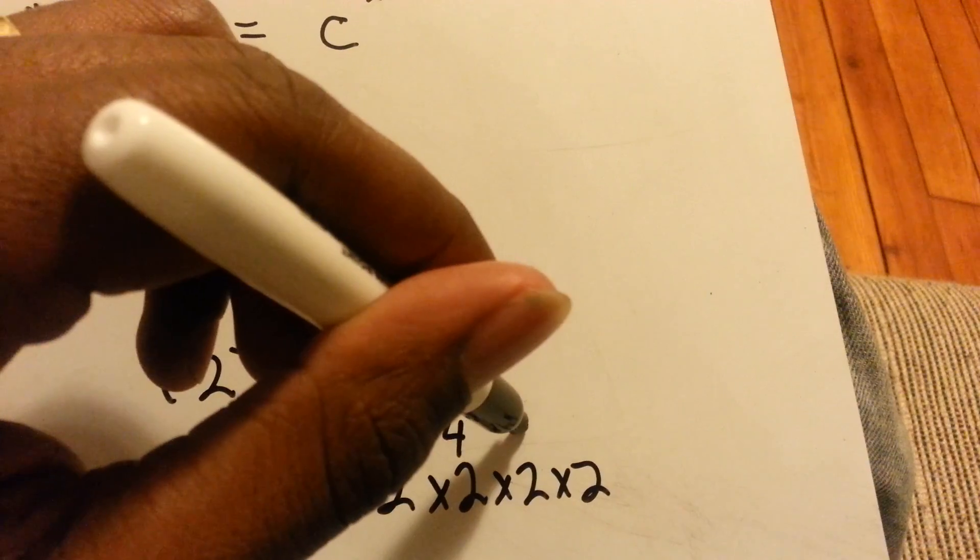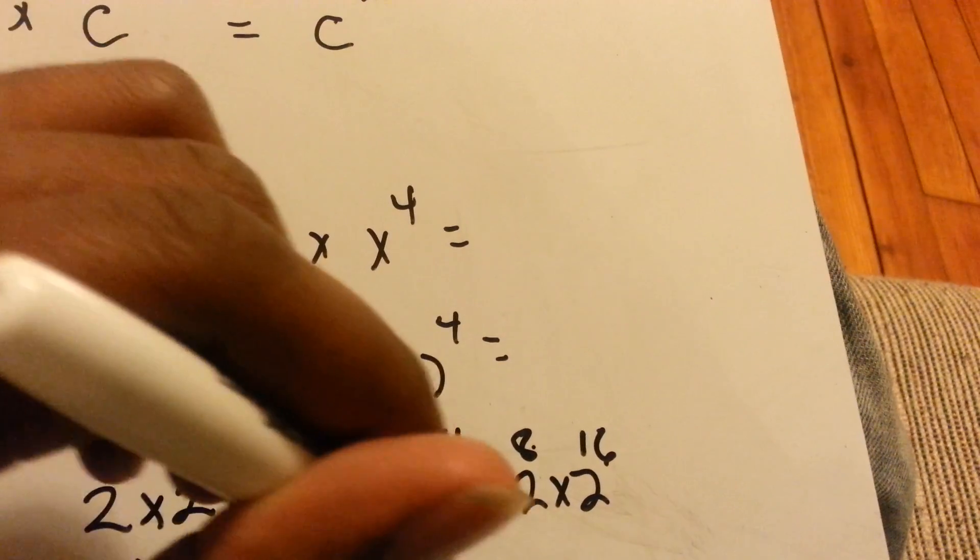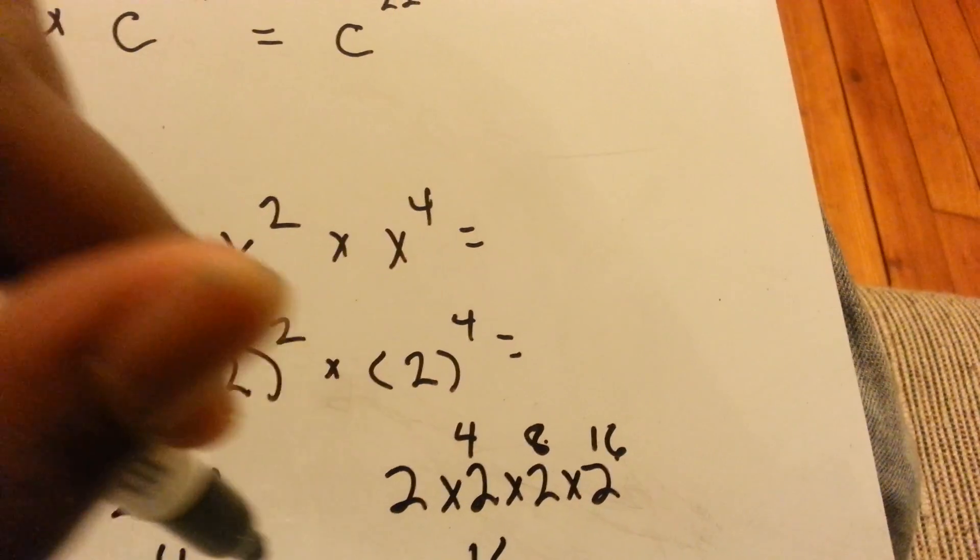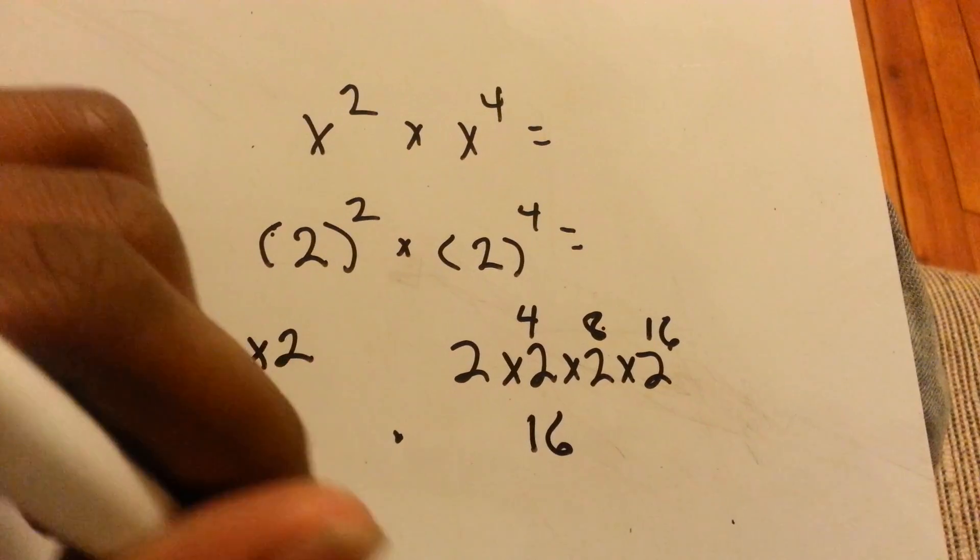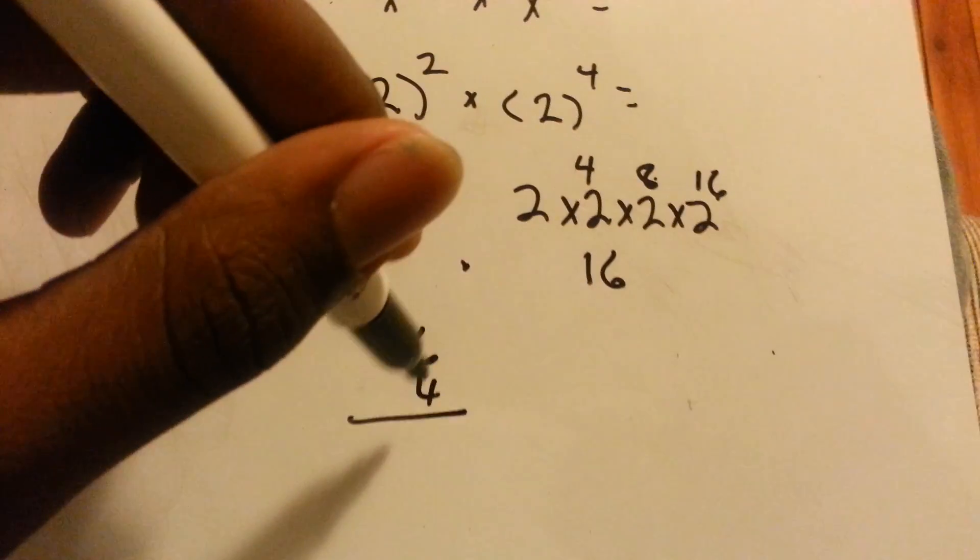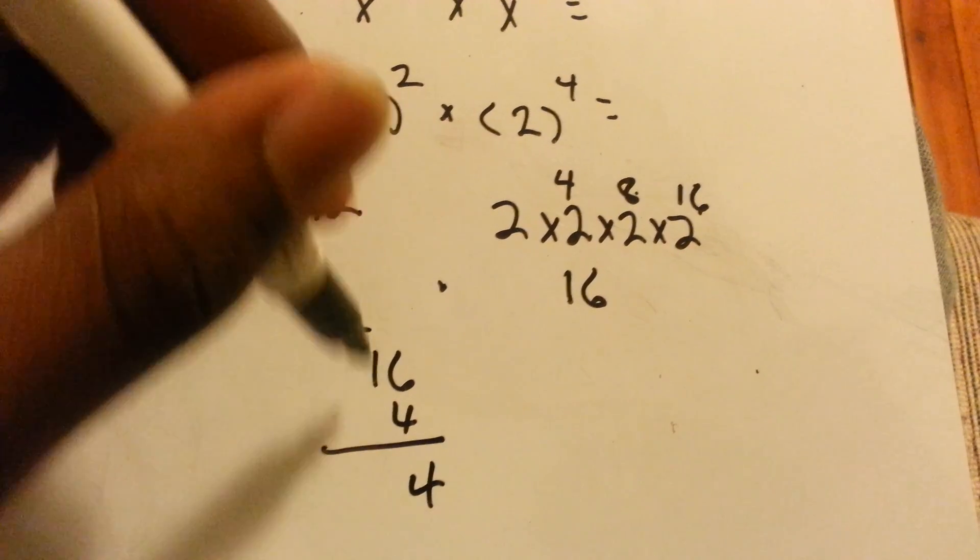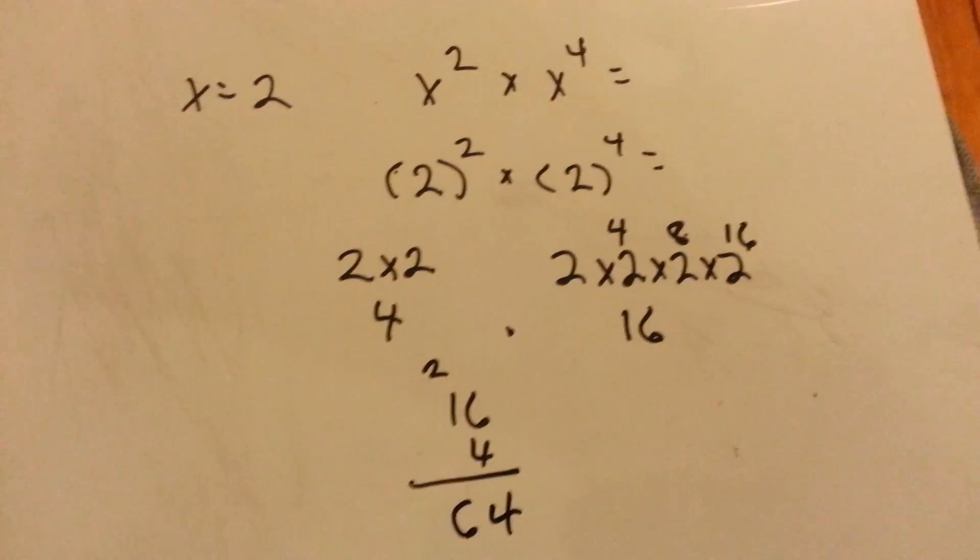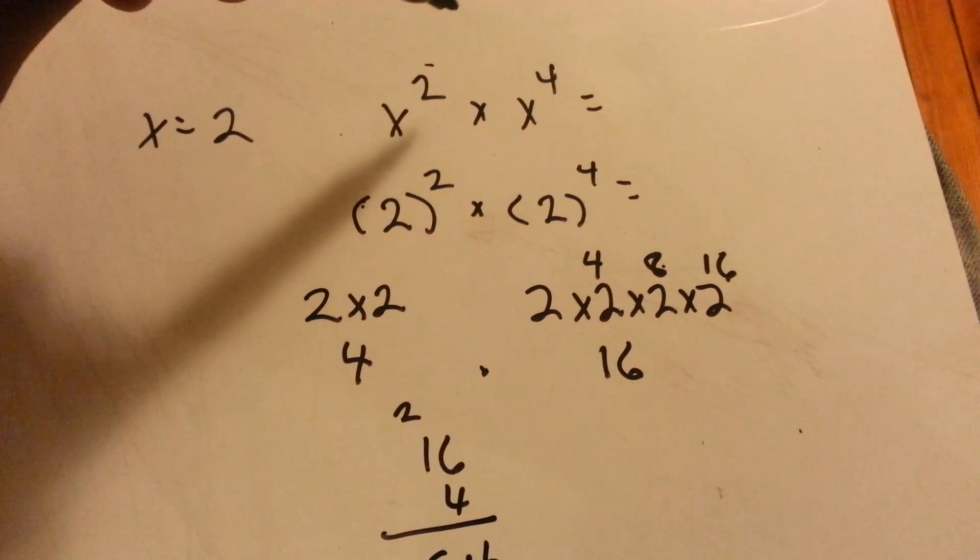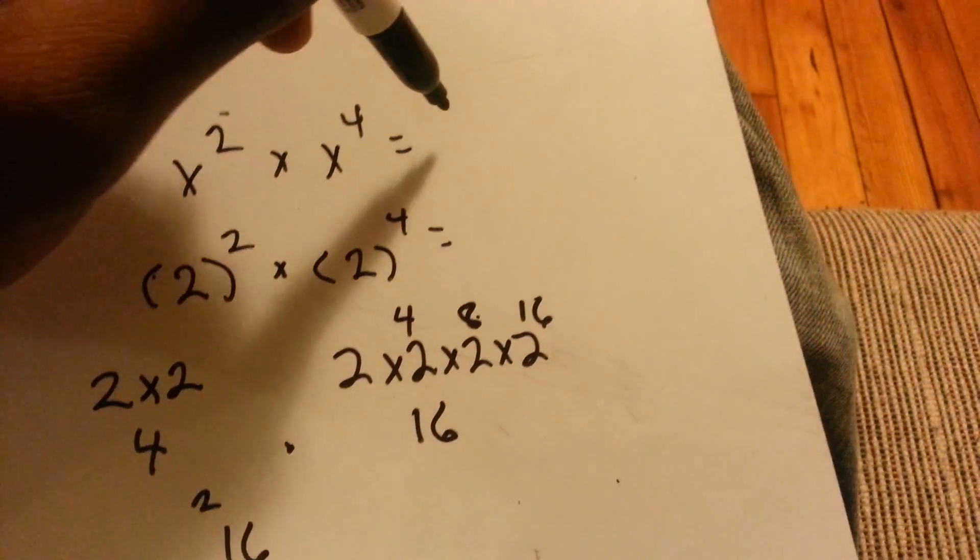And then 2 to the 4th means 2 times 2 times 2 times 2. So 2 times 2 is 4, 4 times 2 is 8, 8 times 2 is 16. So we have 16 times 4 equals 64.